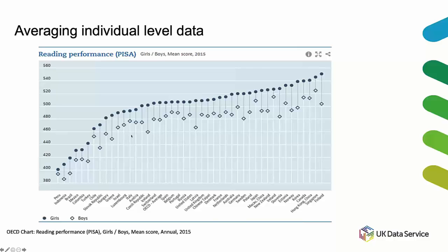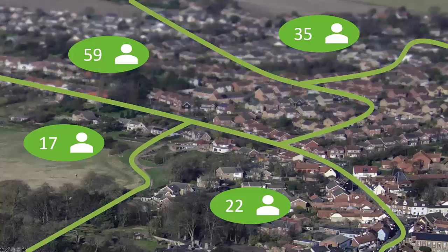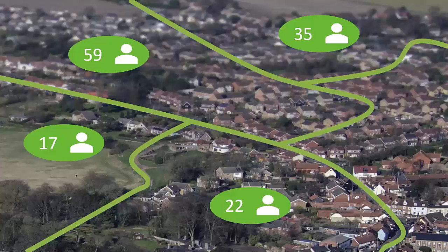Here we have some non-census aggregate data. This is reading performance according to the PISA data. In this example, we have girls identified by circles, boys identified by diamonds, and this is their average reading performance score by country.